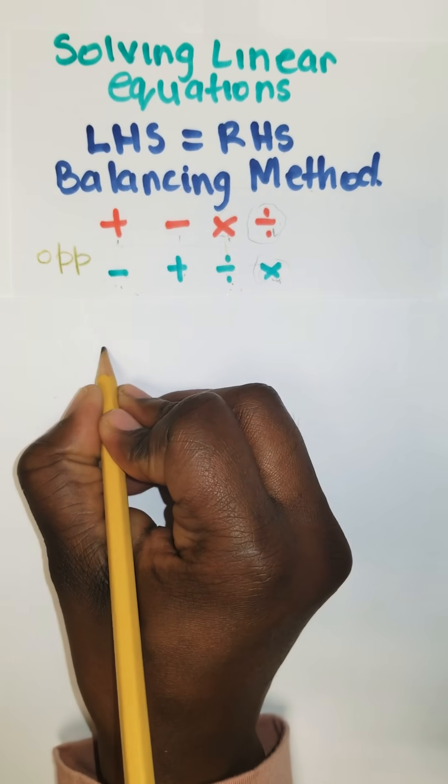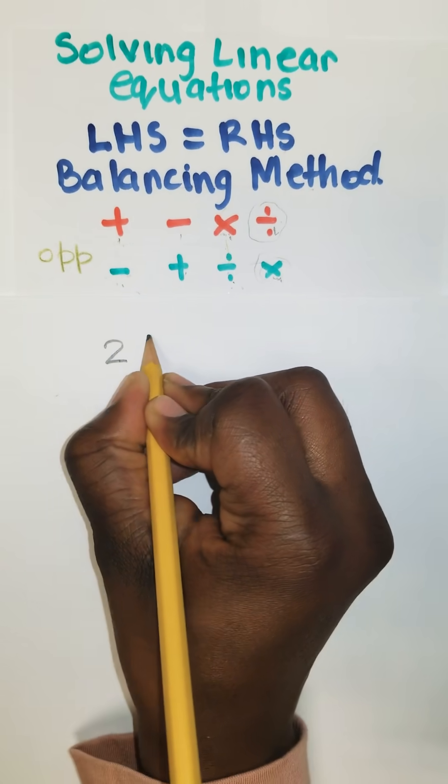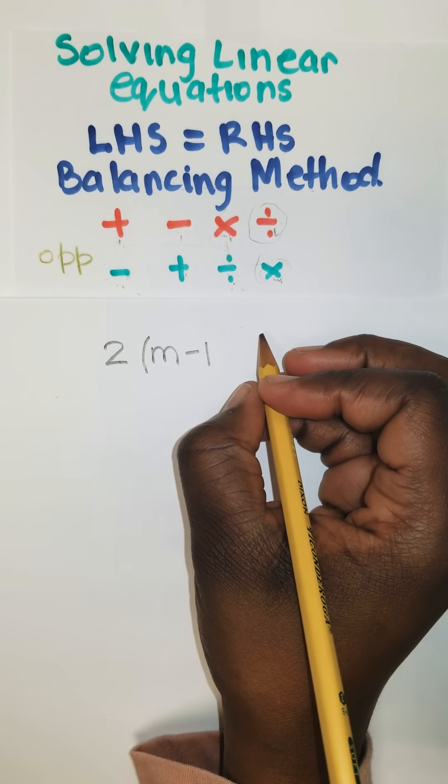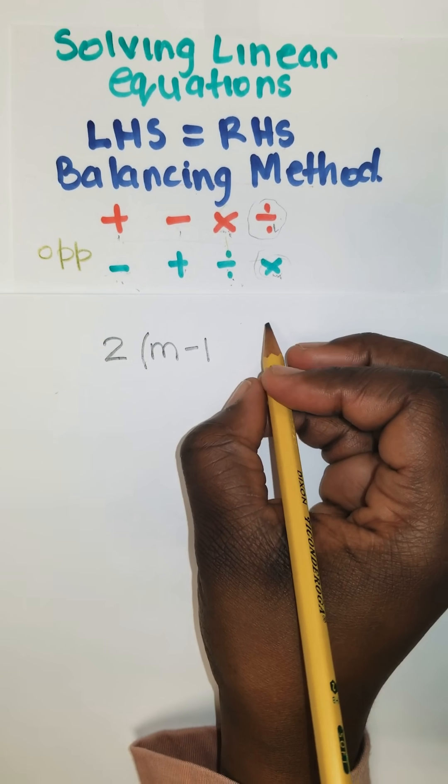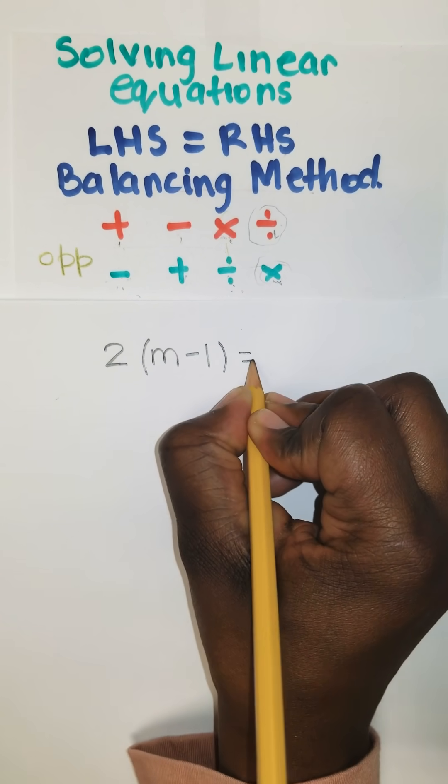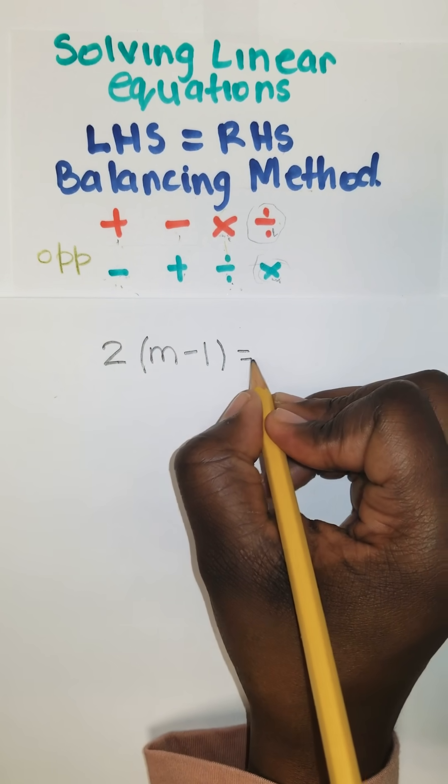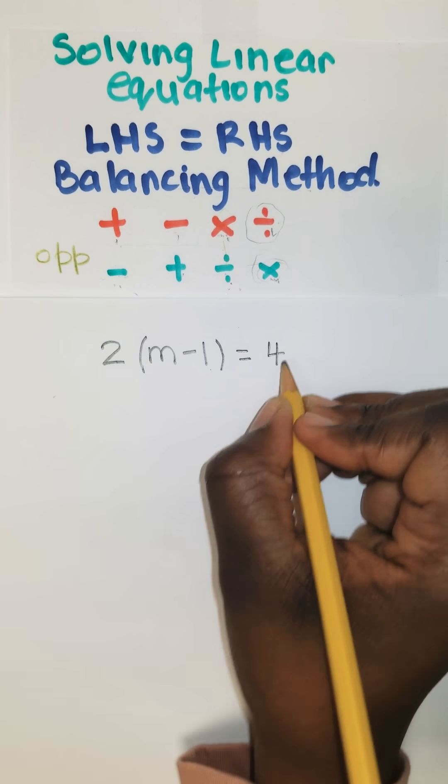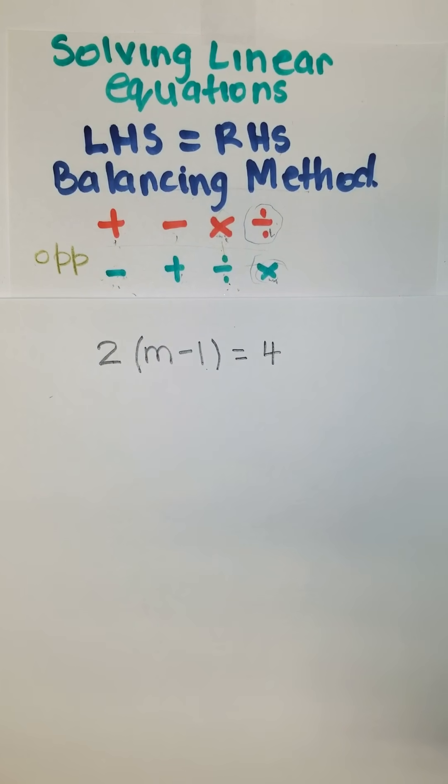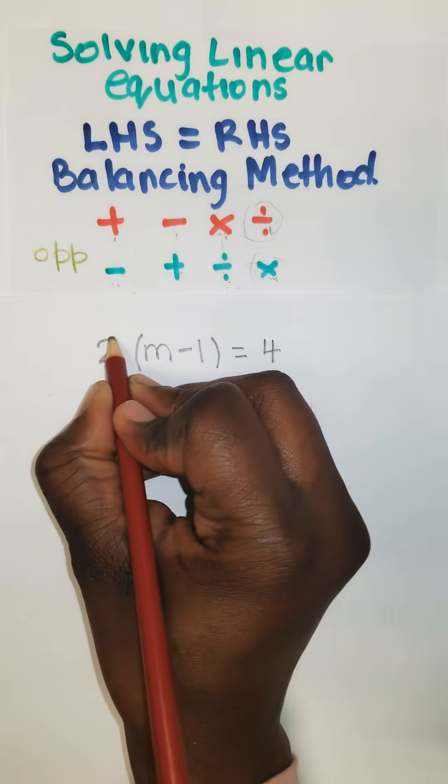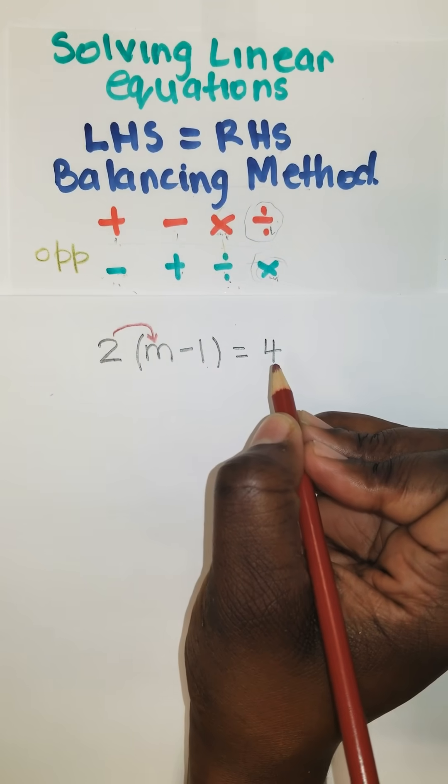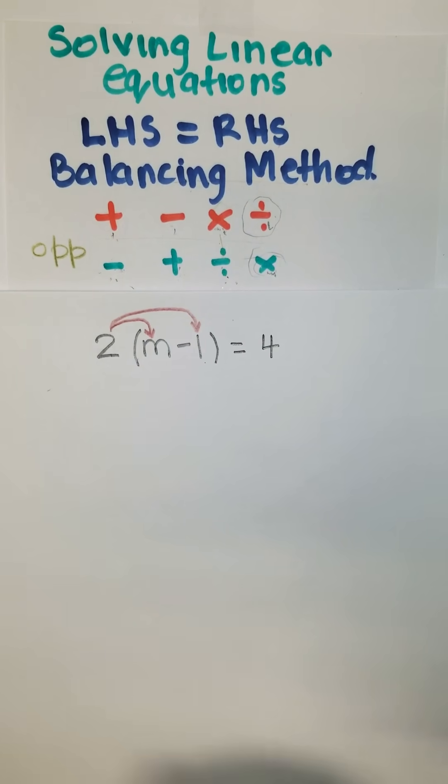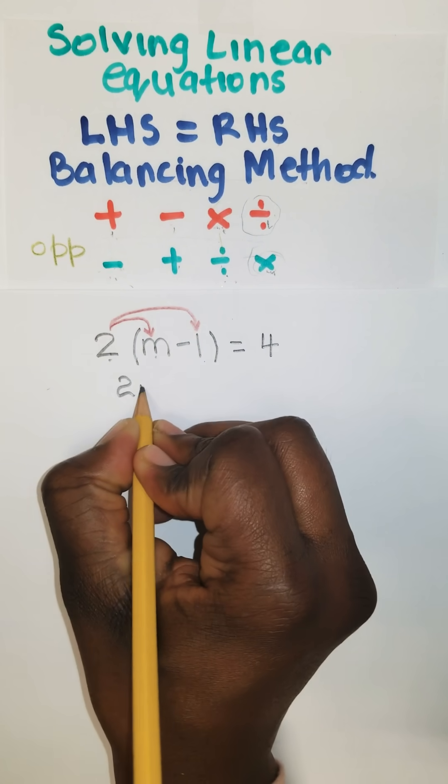So it's 2(m-1) = 4. Again, let's do the truck style, where the delivery truck must go to this store, and it must also go to the other store. So it's 2 times m is 2m. 2 times a negative 1 is a negative 2.